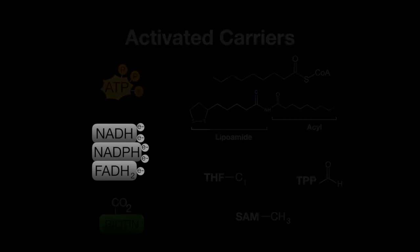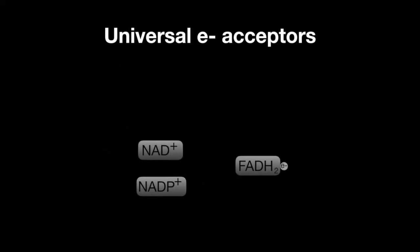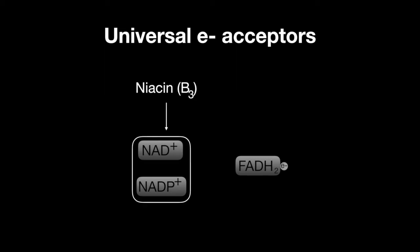The universal electron carriers are nicotinamide, which come in the forms NAD+ or NADP+, and are synthesized from niacin or vitamin B3, as well as flavonucleotides from riboflavin or vitamin B2.